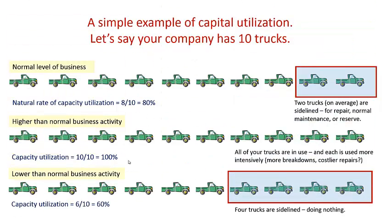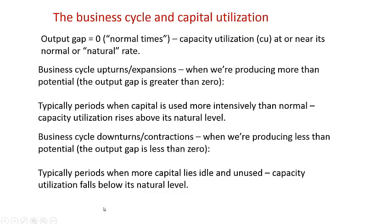In the other direction, if you're facing lower-than-normal business activity and things are slow, you'll sideline more trucks than you really need — sending more to repair, maintenance, or reserve. These trucks are essentially doing nothing. In this case, your capacity utilization rate is lower than the natural rate — 6 out of 10, or 60%.